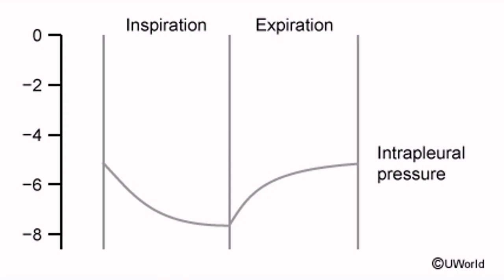The intrapleural pressure is most negative at maximum inspiration — that was the negative eight marked X shown earlier. The intrapleural pressure can never go beyond that, never be more negative than at maximal inspiration, and it always returns back to the value at expiration, which was negative five. But even without knowing all that, you can still get the answer by the process of elimination, as we've seen.